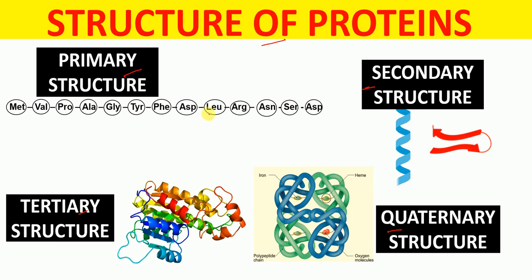Primary structure of the protein is its amino acid sequence. The most common secondary structures are alpha helix and beta sheet. The tertiary structure of the protein is the three-dimensional structure of the protein, whereas the quaternary structure involves the interaction of more than one subunit, as shown here.